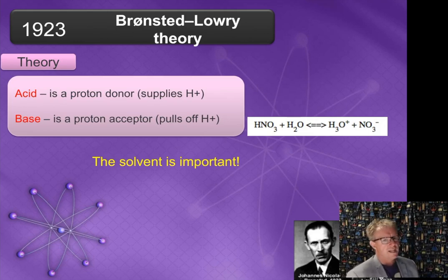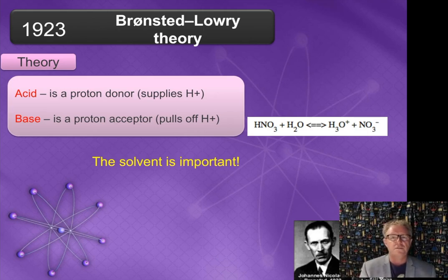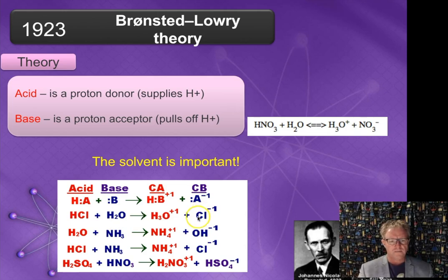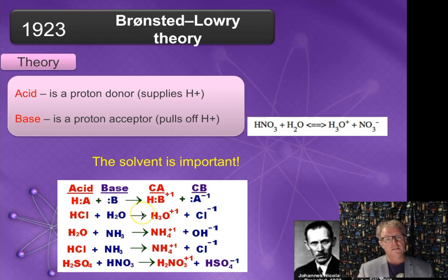Now we get to the Bronsted-Lowry theory, which allows us to explain those previous problems. They say that an acid is a proton donor — it supplies a hydrogen ion — and a base is a proton acceptor. In other words, the solvent plays an important role. For example, hydrochloric acid as the acid donates H+ to the base. The water accepts the H+ from the acid and forms a hydronium ion. So we have an acid donating H+ and a base accepting it — that's the Bronsted-Lowry theory.